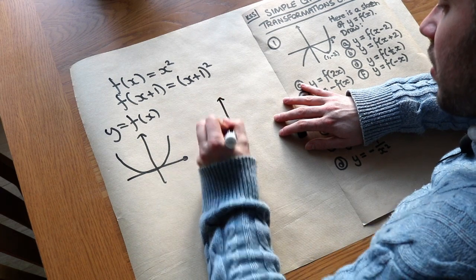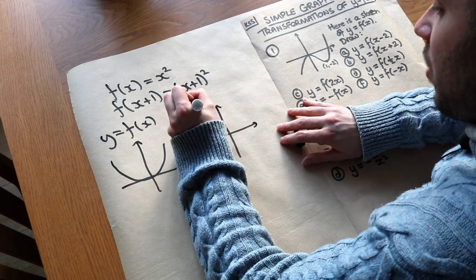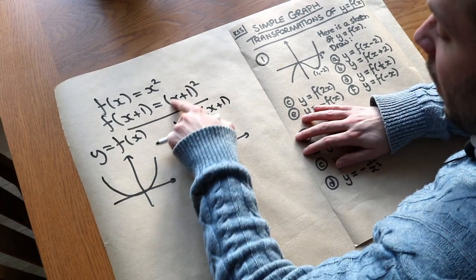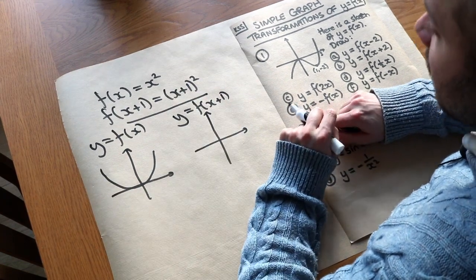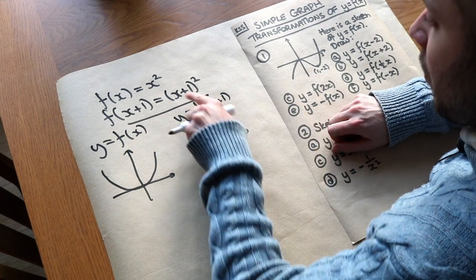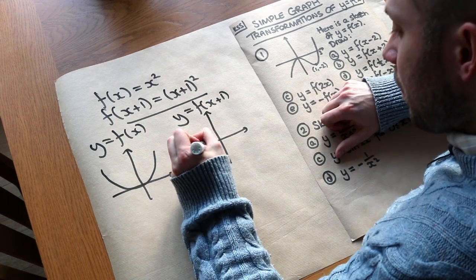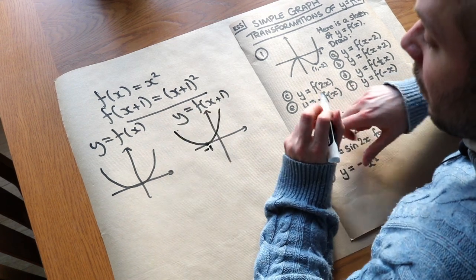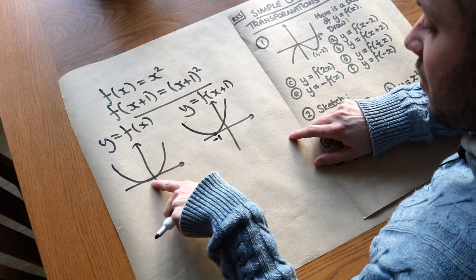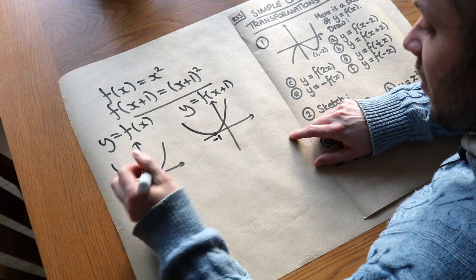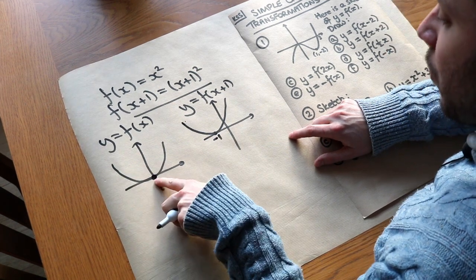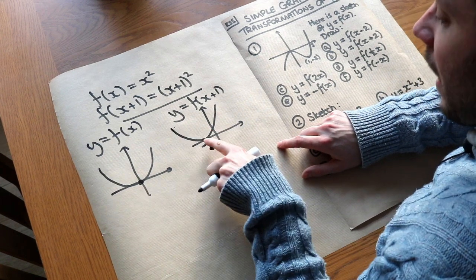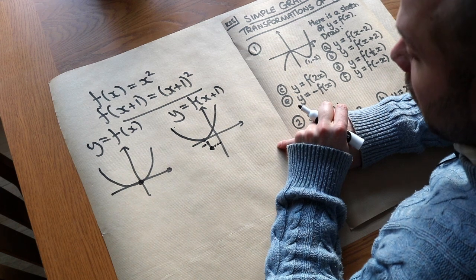Now what if we were to sketch y equals f of x plus 1? We're sketching y equals x plus 1 all squared. The root of this would be minus 1, and it's still going to be a smiley face shape because it's a quadratic. Can you see that this graph has translated 1 to the left? Initially that minimum point was at 0, 0, and now that minimum point has moved 1 to the left to minus 1, 0.